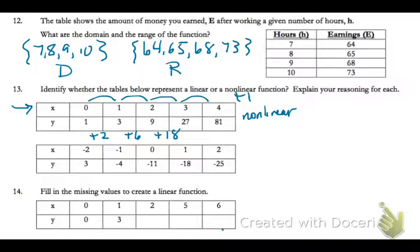Linear is going to increase or decrease by a common amount. So, now my second table. First of all, I look at my inputs and I see if I have even amounts, which I do. I am adding one each time.